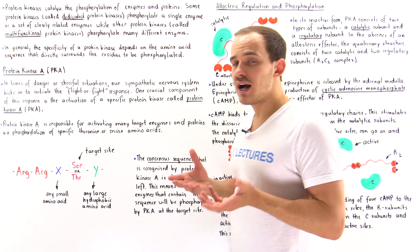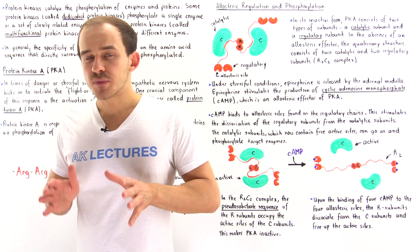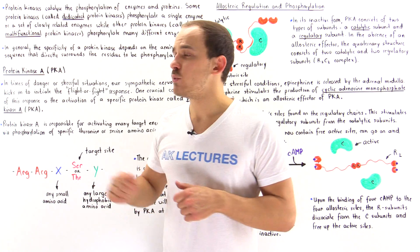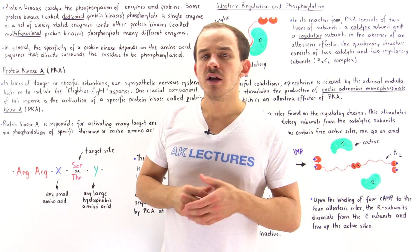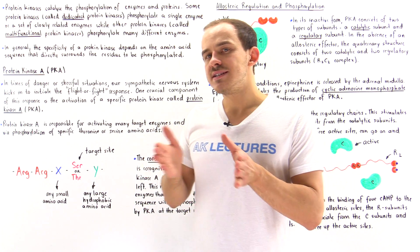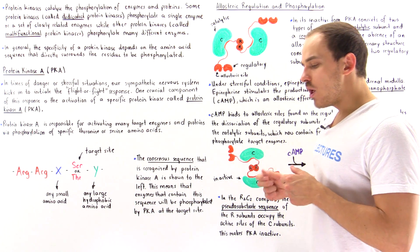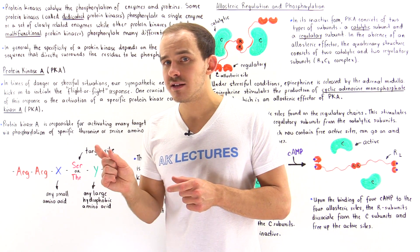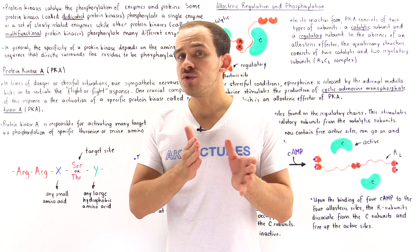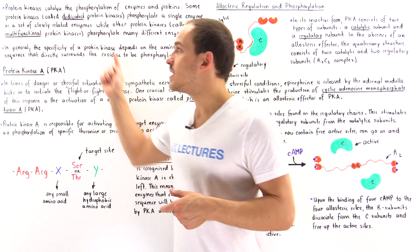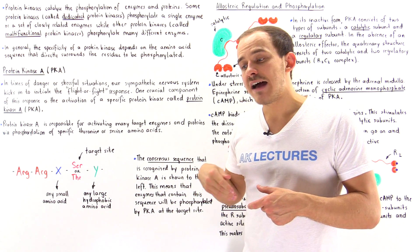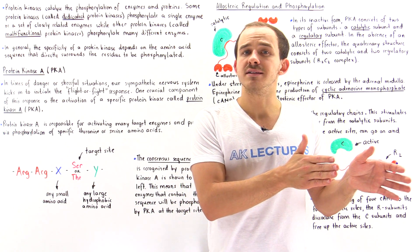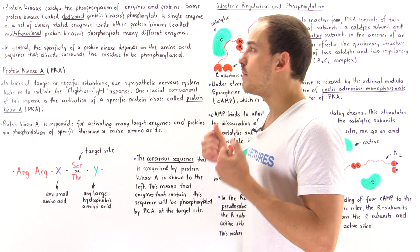We can categorize protein kinases into two groups. On one side we have a group called dedicated protein kinases, and on the other side we have a group known as multifunctional protein kinases. Dedicated protein kinases phosphorylate either a single substrate molecule or a set of closely related substrate molecules, while multifunctional protein kinases have the capability of catalyzing the phosphorylation of many different types of enzymes and protein molecules.